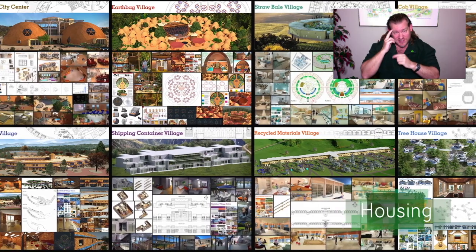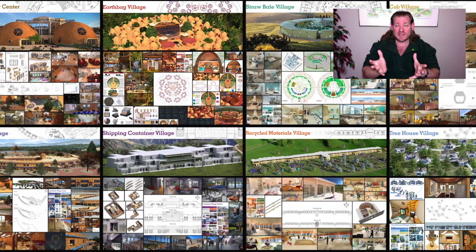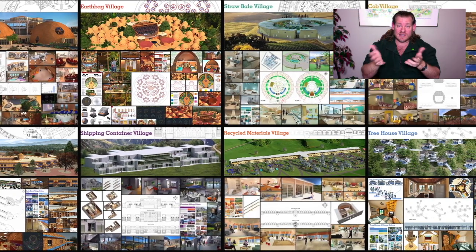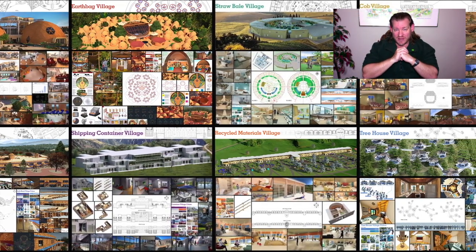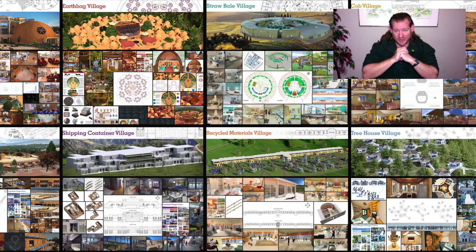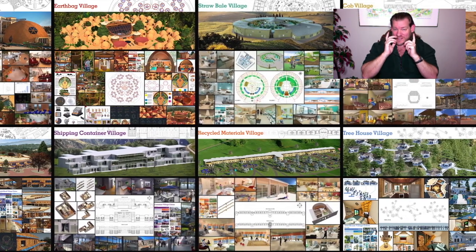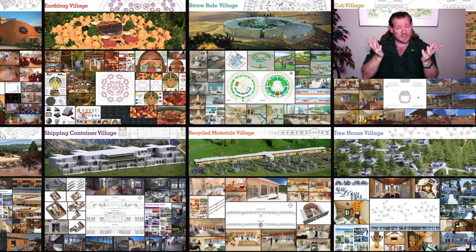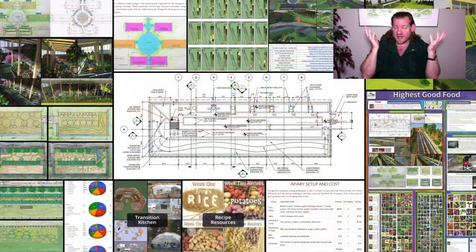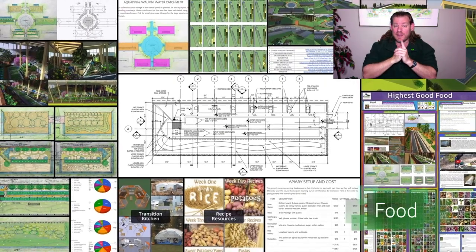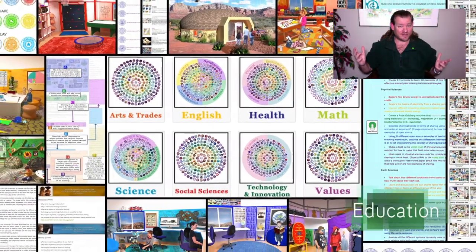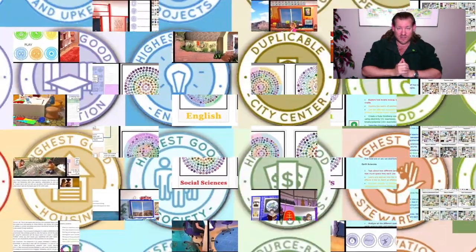One Community is bringing together people with the consciousness and desire for the highest good of all life on the planet to build sustainable and self-replicating teacher demonstration hubs as a pathway to global sustainability. This is our December 26th weekly progress update — happy day after Christmas, happy holidays to everybody. Today's topic is open source eco village construction.